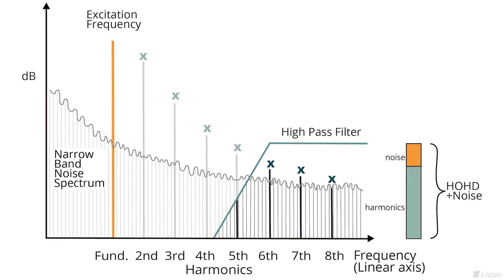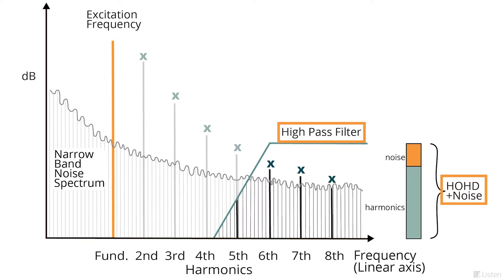There are two commonly used methods for measuring rub and buzz. The tracking high-pass filter method uses a high-pass filter to remove the lower harmonics and sum the remainder. This combines all the harmonics plus transient distortion caused by loose particles into a single metric. While this gives an overall indication of distortion level, it reveals nothing about the cause of the distortion. It is also susceptible to background noise, which can result in false rejects on the production line.